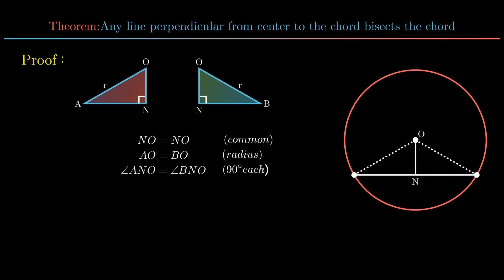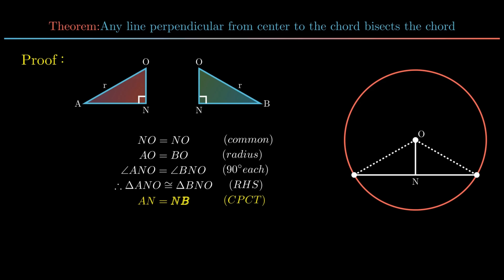Therefore, by RHS congruency, triangle ANO is congruent to triangle BNO. Hence by corresponding parts of congruent triangles, we conclude side AN is equal to side NB. Hence the theorem is proved.